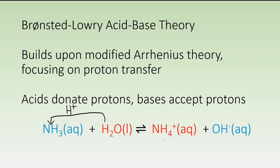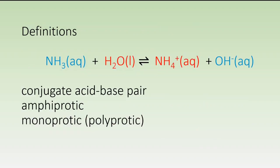To show the proton transfer in the reverse direction, we would have ammonium ion transferring to hydroxide ion. It's important to go through and talk about Bronsted-Lowry theory from the basis of certain definitions. A Bronsted-Lowry acid is always used as a proton donor. These are color-coded so that both red substances are proton donors based on the arrows shown in the previous slide.